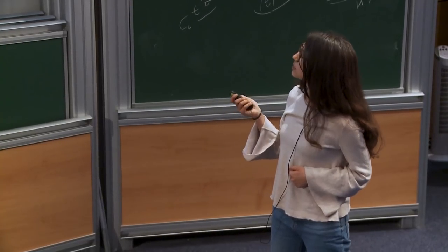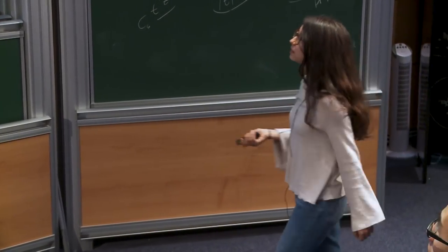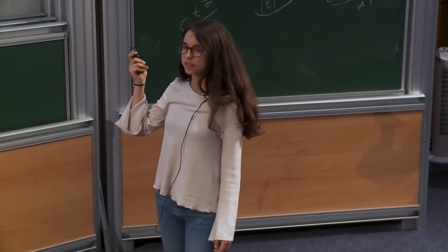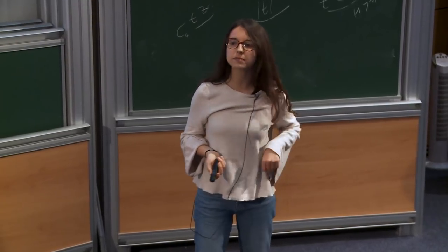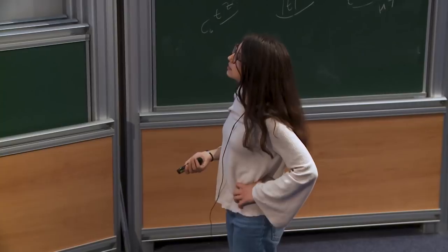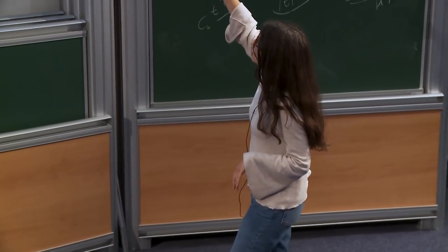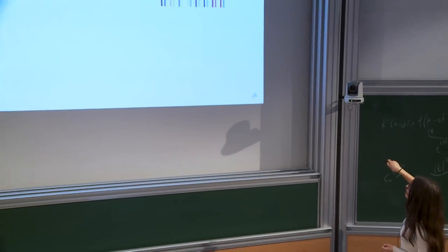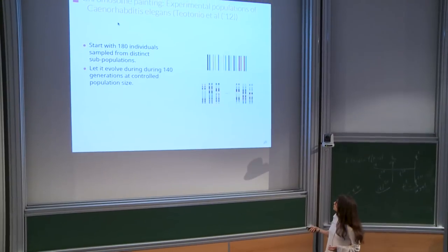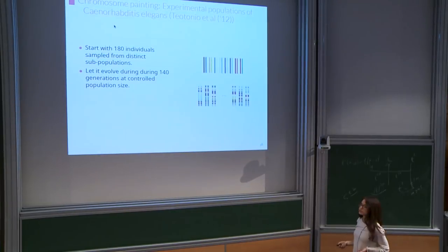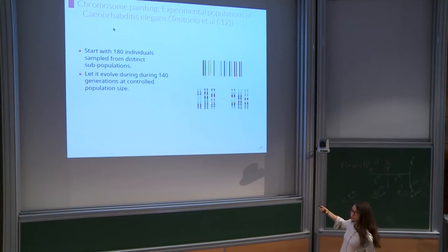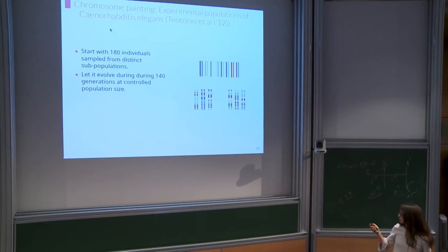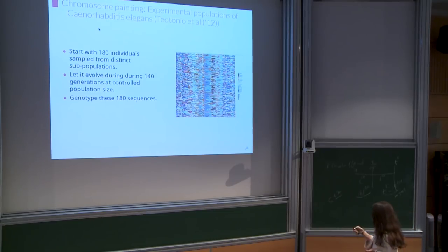The work I'm going to present today was inspired by the following experiment carried out by Enrique de Otonio at ENS. He studies Caenorhabditis elegans, which are small transparent worms. We start with a population of 180 individuals sampled from distinct populations. Each line represents the chromosome of one individual — they are all distinct, painted in different colors — and he let the population evolve for some generations. After some time, the chromosomes of the individuals look like mosaics of colors.